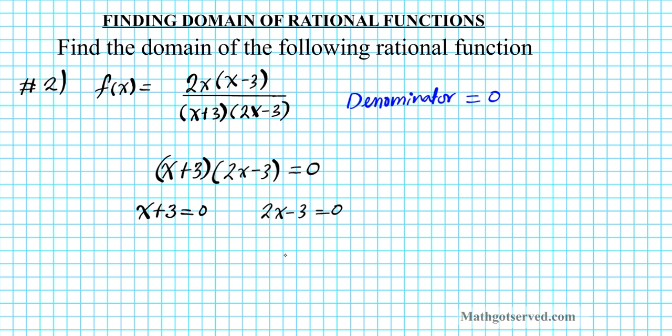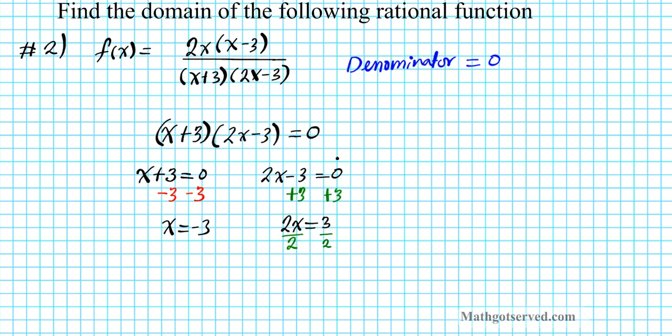We're going to have two values to be excluded from the domain of this function. Let's solve the first one, subtract 3 from both sides. We'll have x equals negative 3. If you take a look at the second equation, all you do is add 3 to both sides and divide by 2. Add 3 to both sides, that yields 2x equals positive 3, and then divide both sides by 2. That will isolate x and we'll have x equals 3 over 2.